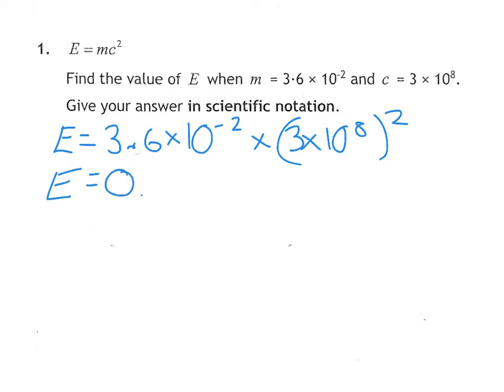That would be 0.036, moving the point two places left because it's a tiny number, times 3 with 8 zeros, and then square it. I could potentially write 16 zeros there, but that's going to take up an awful lot of space. You could type that into your calculator, or you could go back to the original line.